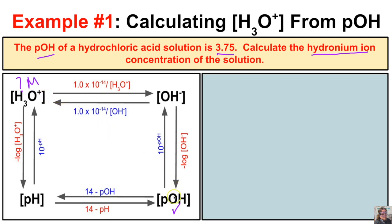So how do we do this? We can do this one of two ways. We can figure out the hydroxide ion concentration and then figure out the hydronium ion concentration, or we can figure out the pH and then figure out the hydronium ion concentration. Either way, you should get the same answer, and you can see these are going to be two-step problems.